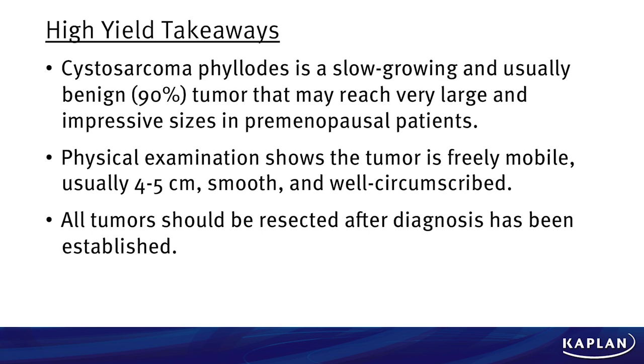High-yield takeaway points: cystosarcoma phylloides is slow-growing and usually benign in over 90% of circumstances. It may reach very large and impressive sizes in premenopausal patients. Physical exam shows the tumor is freely mobile, usually 4 to 5 centimeters or greater, smooth and well-circumscribed. All tumors should be resected after a diagnosis is established. I'm Dr. Jason Furnasiak — we'll see you again real soon. Take care.